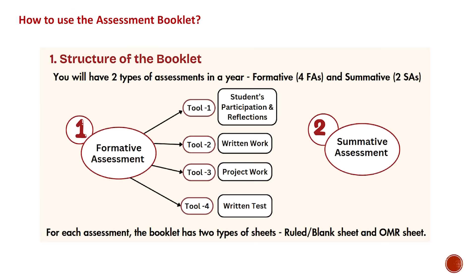How to use the assessment booklet for formative assessment: Tool 1 covers Student Participation and Reflections, where a student problem is created and a solution is written. Tool 2 is written work — written notes and homework, scoring 5 marks. Tool 3 is project work, 5 marks. Tool 4 is the written test, 35 marks. Total FA marks: 50. Summative assessment is 80 marks.